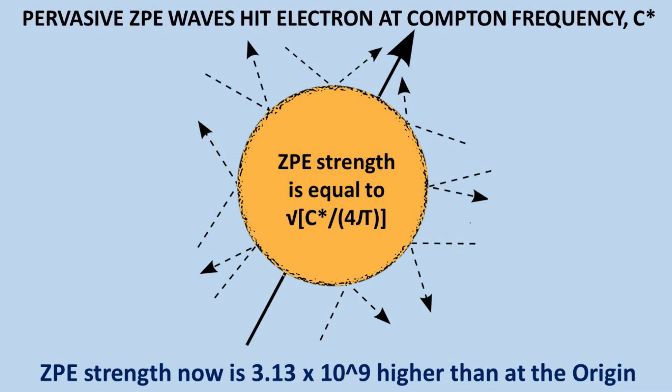This sketch shows the pervasive ZPE waves hit the electron at the Compton frequency, C star. But it is true that the ZPE strength is equal to the square root of C star over 4 pi. This tells us that the ZPE is 3.13 by 10 to the 9 higher now than at the origin when the stretching of space had just begun. Since the higher the ZPE, the slower the electric and magnetic processes will be, we divide by this factor in Peratt's plasma equations. The following information then emerges.